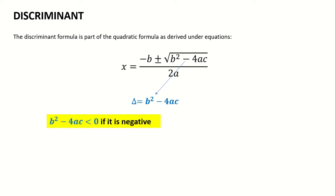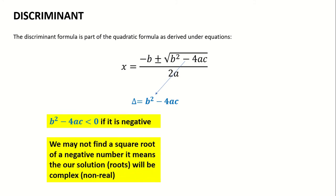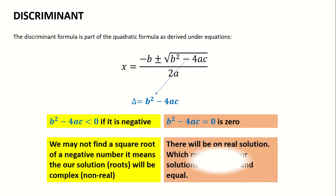If b squared minus 4ac is less than 0, meaning that underneath the square root we have a negative value, then the root x will have a non-real solution — what we refer to as a complex solution. If whatever is underneath the square root is equal to 0, we'll just be left with minus b all over 2a, meaning our solution will be real, equal, and rational.